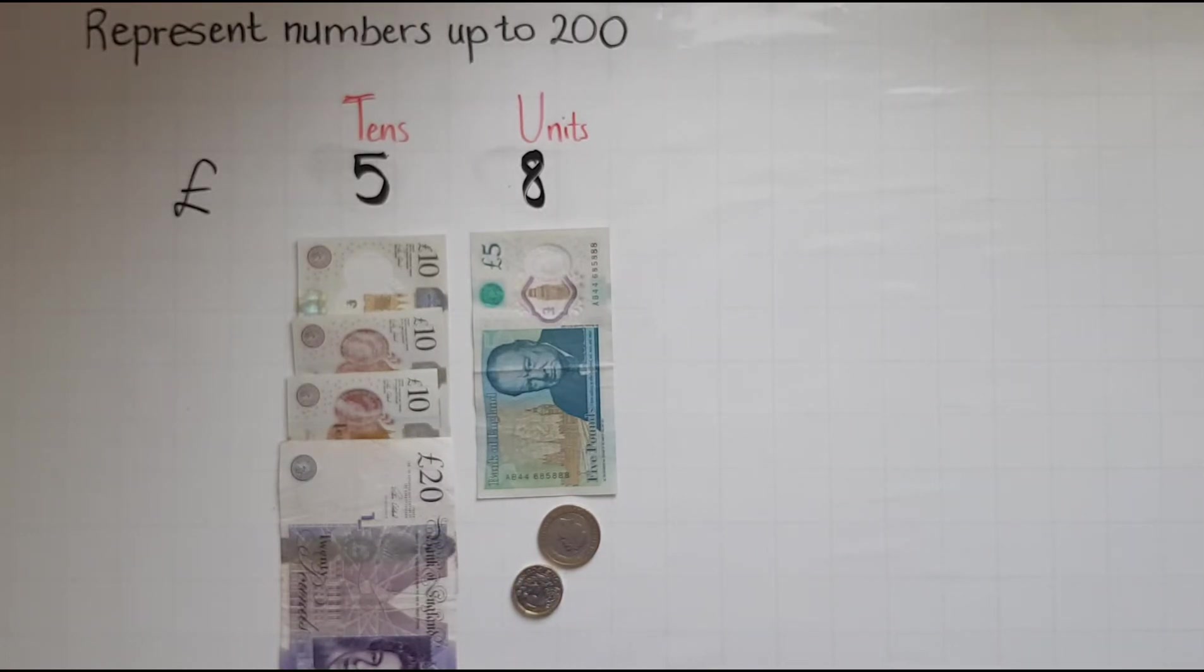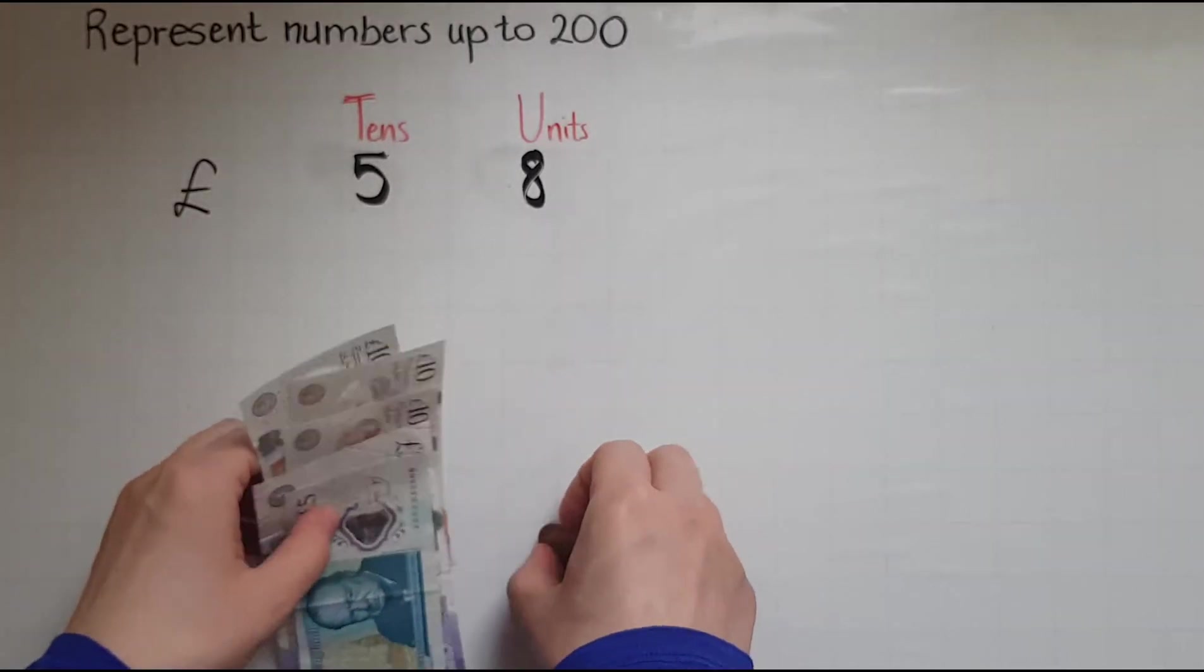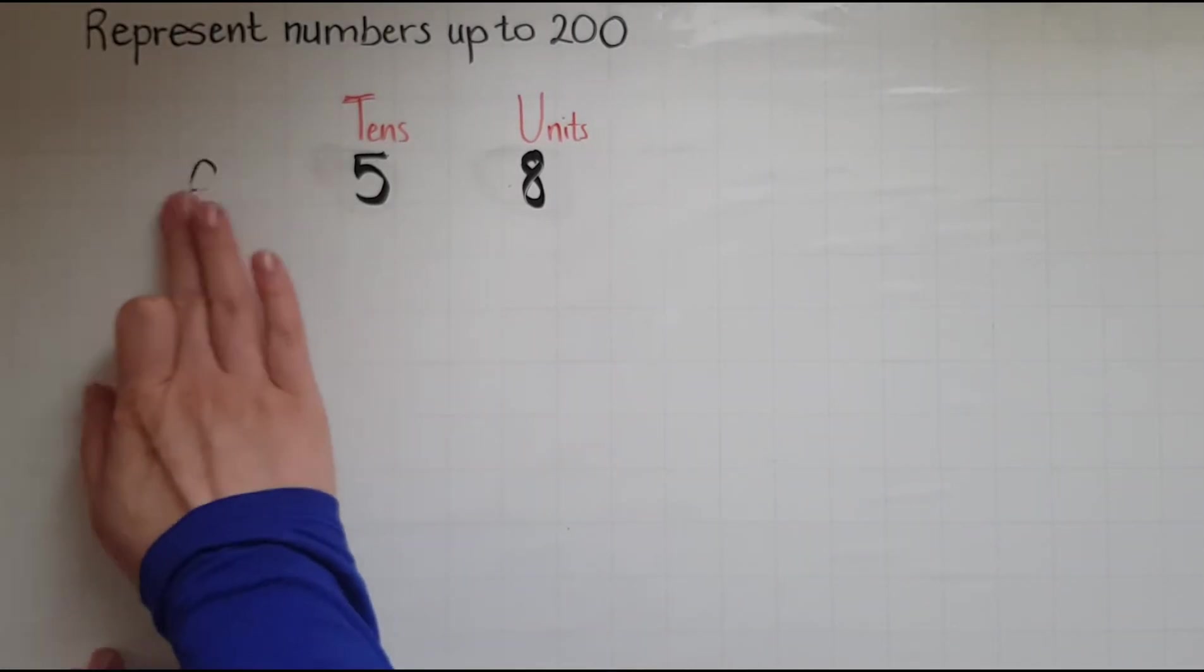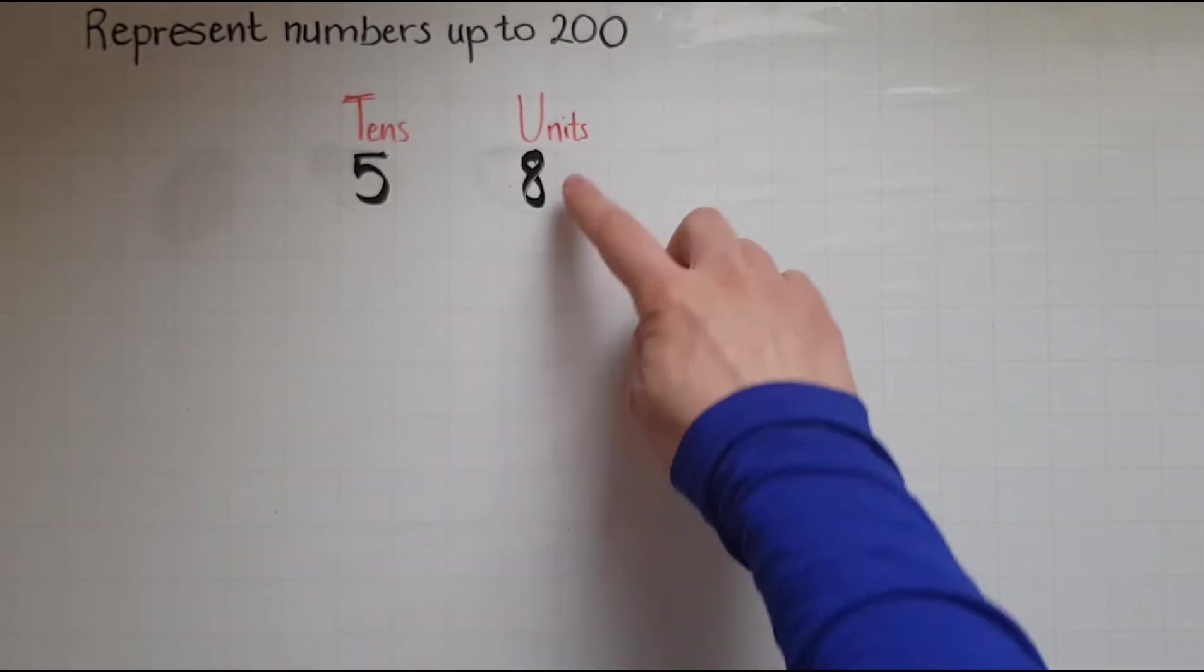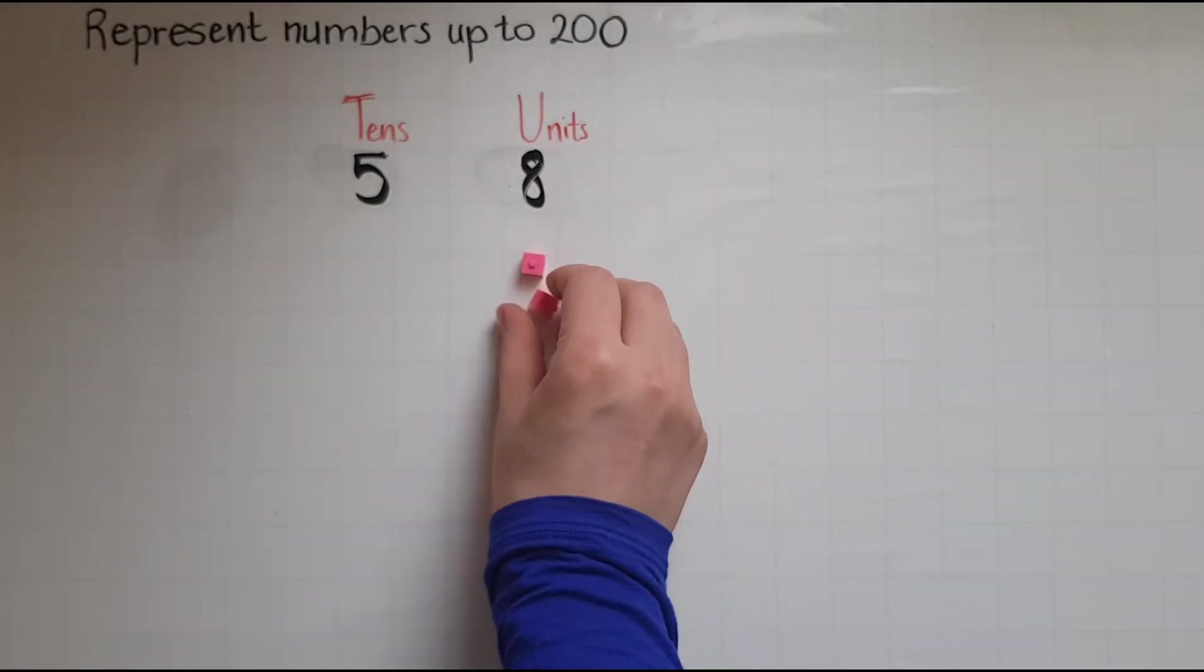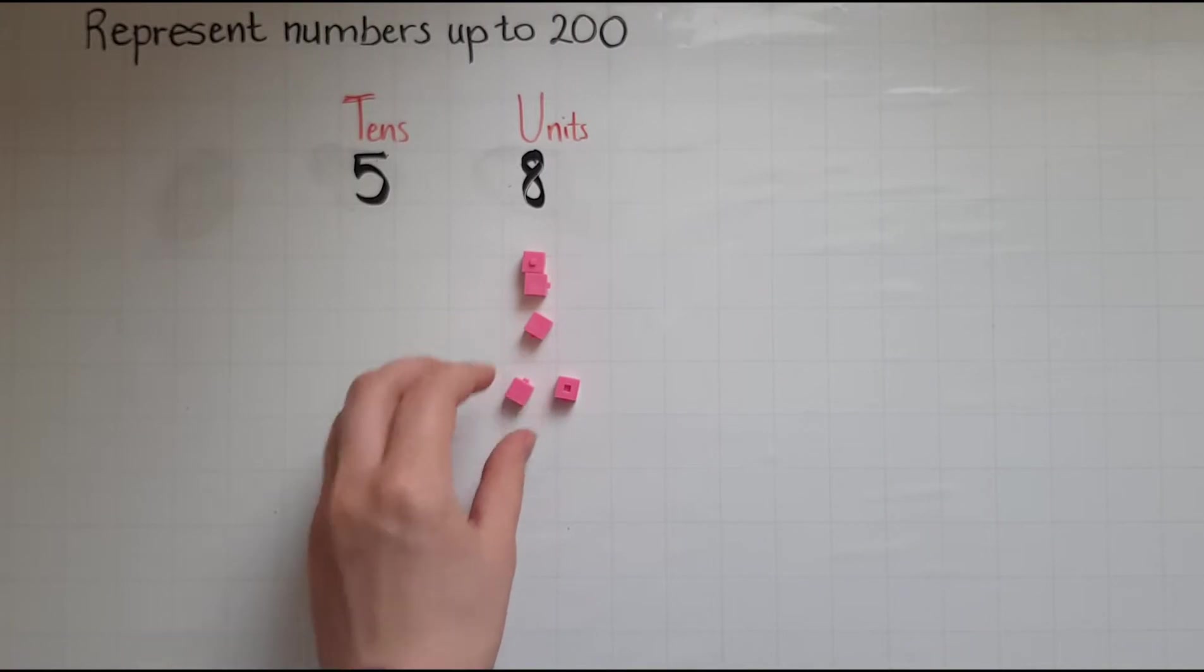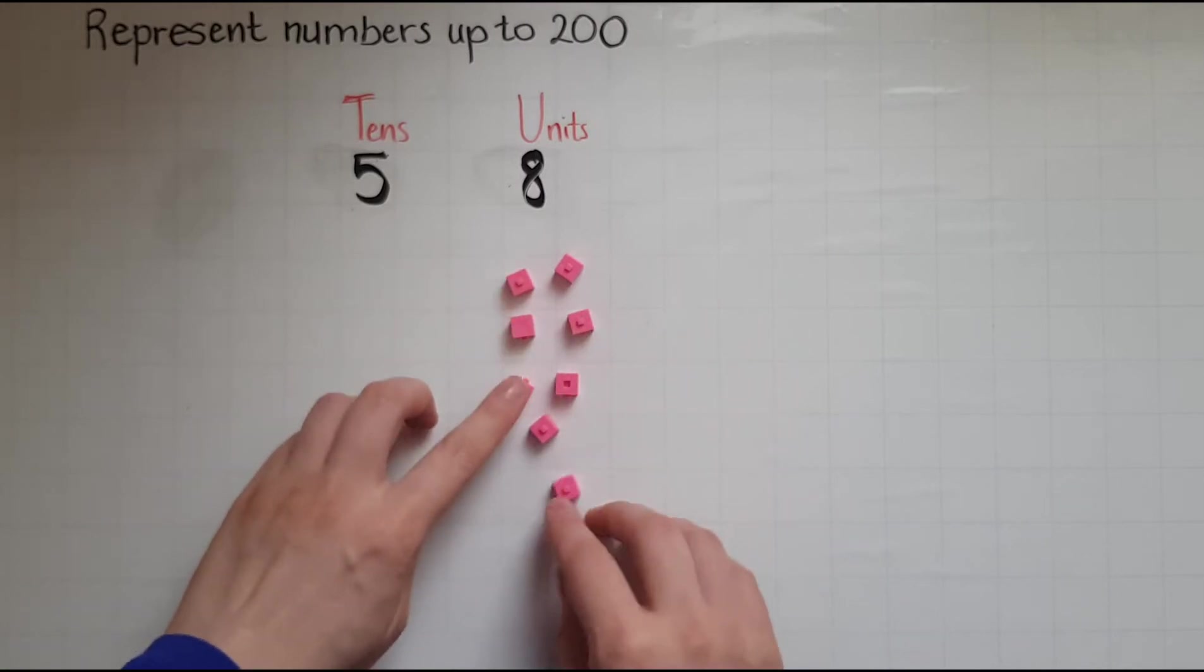I will now use cubes to represent the same amount. So I'll take away the money and I'll represent this amount using cubes and I'll take away the pound sign. So this time I got eight units. So I'm going to add one, two, three, four, five, six, seven, eight single units or single cubes.